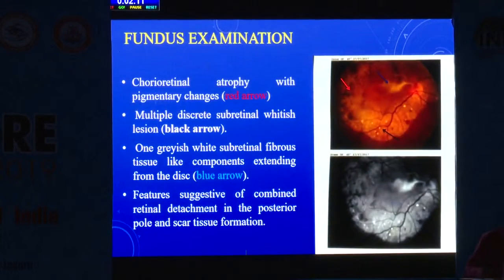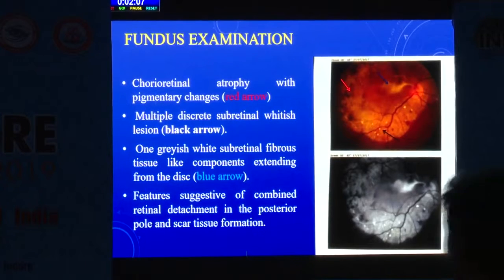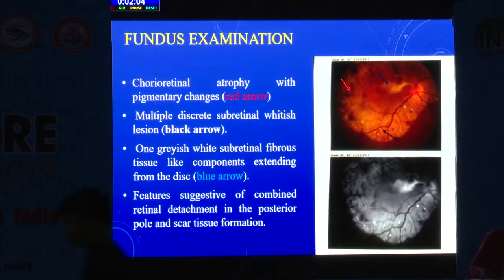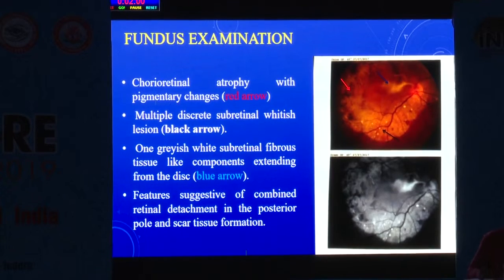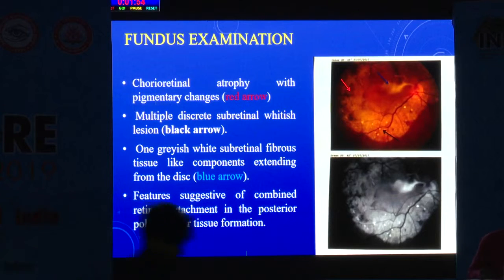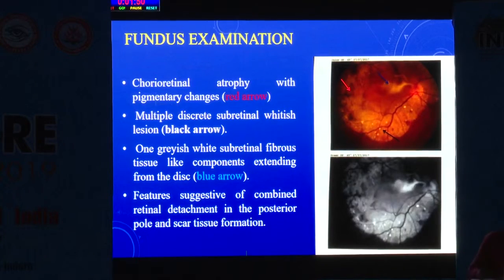On fundus examination, there was chorioretinal atrophy with pigmentary changes. There were multiple discrete subretinal whitish lesions. One grayish-white subretinal fibrous tissue-like component extending from the optic disc was present, with features suggestive of combined retinal detachment in the posterior pole with scar tissue formation.